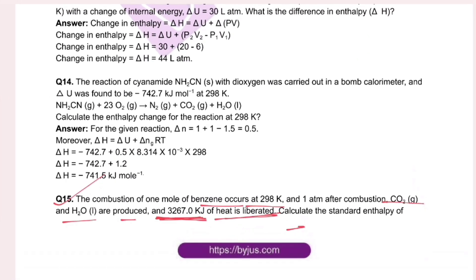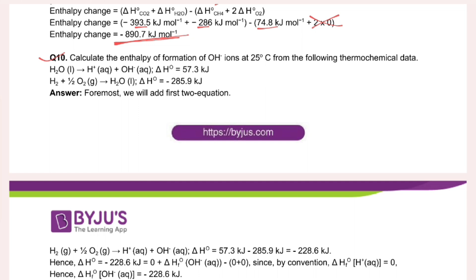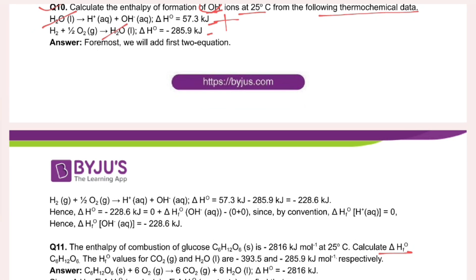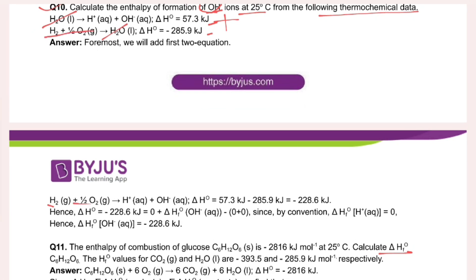Another question: calculate the enthalpy of formation of OH⁻ ions at 25 degrees Celsius from the following thermochemical data. We have two equations: H2O gives H⁺ plus OH⁻ with a given enthalpy change, and a second equation. Adding these two equations, the result is minus 228.6 kJ.